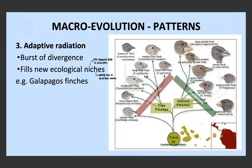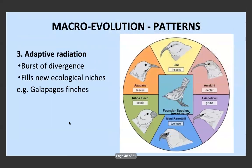The third pattern of macroevolution is adaptive radiation, which is basically a burst of divergence — a sudden amount of new species are formed relatively quickly on an evolutionary timescale, though still very slowly by human lifetime standards. This happens because there are a whole lot of new ecological niches that need to be filled — new food sources, new roles to be played, new types of competition. A key example is the Galapagos finches, where there's one founder species and suddenly there's a burst of divergence to form all these new species. That's adaptive radiation.